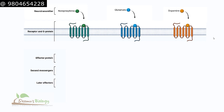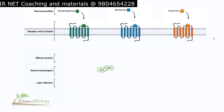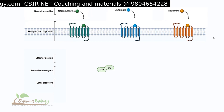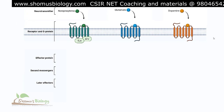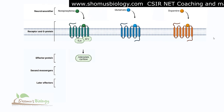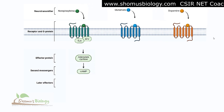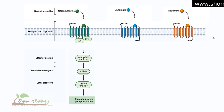Once norepinephrine binds to its GPCR on the surface of the cell, the Gs alpha and beta-gamma G protein subunits associate with the GPCR. The alpha subunit then dissociates from the beta-gamma unit and activates the first cytosolic effector molecule, adenylate cyclase. Adenylate cyclase generates the second messenger cyclic AMP, which then amplifies and activates protein kinase A — the downstream effector molecule — increasing protein phosphorylation and allowing the cell to receive a proliferation signal for growth.